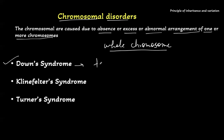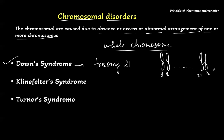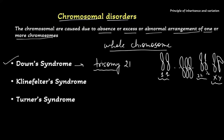Down syndrome is also called Trisomy 21. We already know that we have two copies of each chromosome — whether it is chromosome number 1, chromosome number 22, or X and Y chromosomes, we have two copies of each chromosome. In the case of males, both chromosomes are different. In Trisomy 21, chromosome number 21 is present three times. So instead of 46 chromosomes, we have 47 chromosomes total because chromosome number 21 is present three times — that's why it's called Trisomy 21. We will also talk about the symptoms of these people.